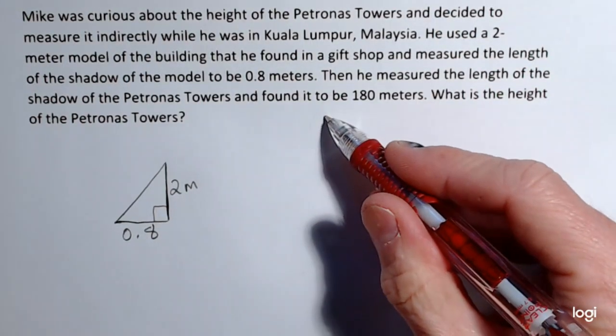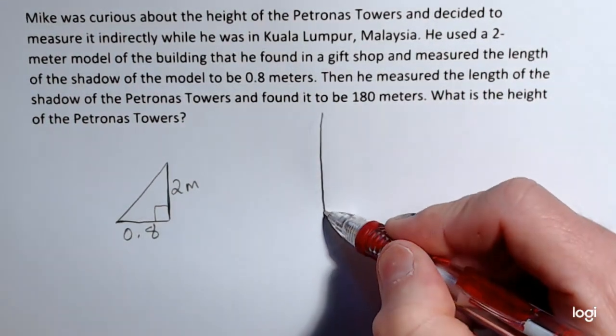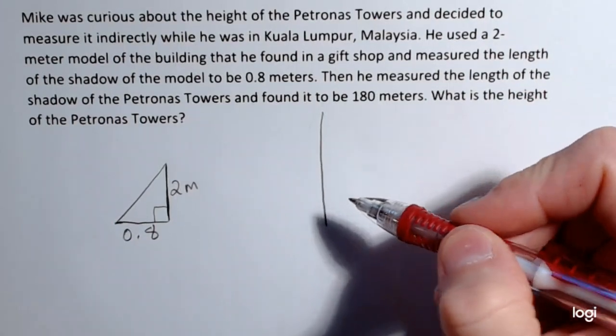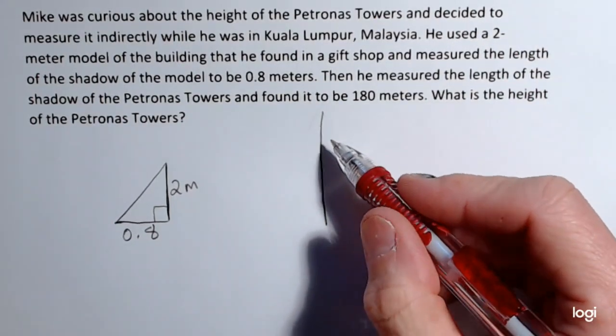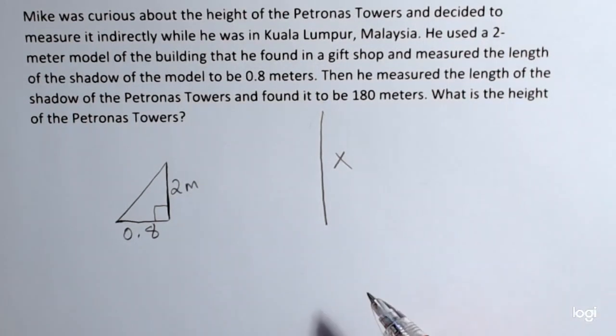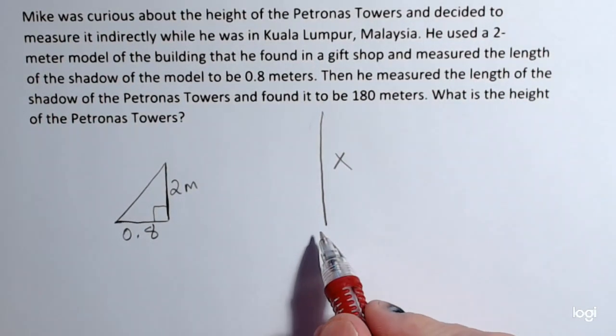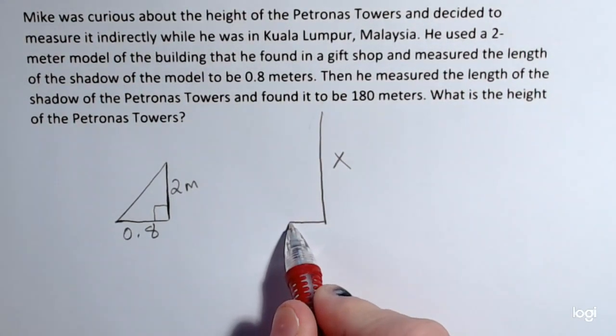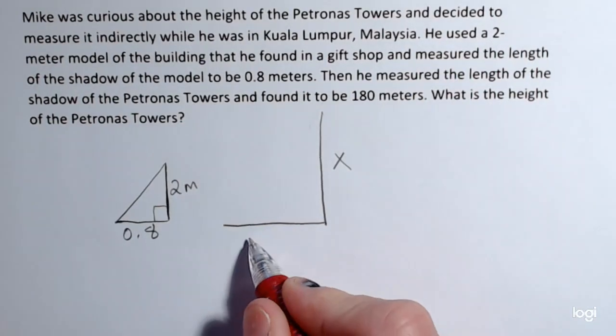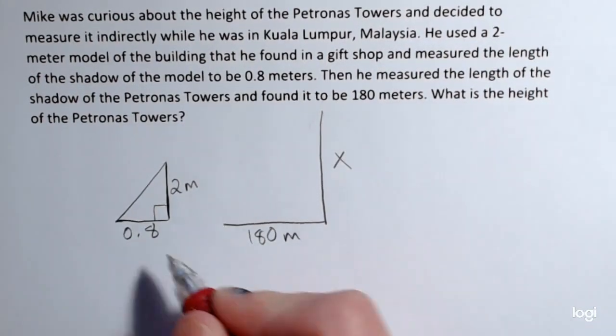Now for the actual tower, this is not going to be proportionally correct. He wants to know the height of it, I'll call that X, and he measured the shadow and found that it was 180 meters.